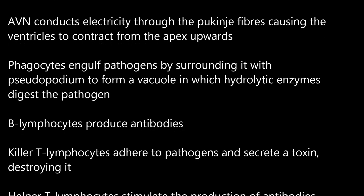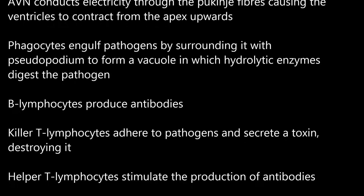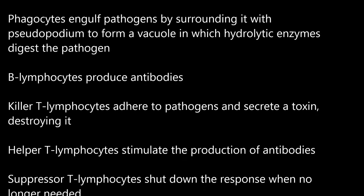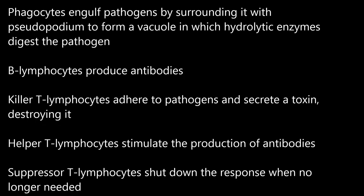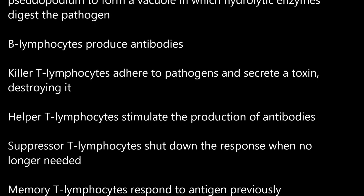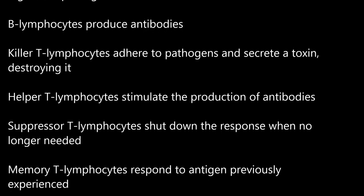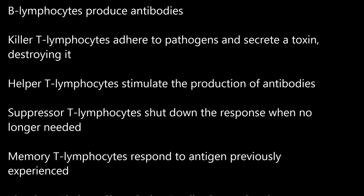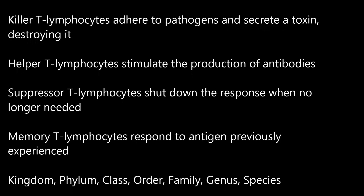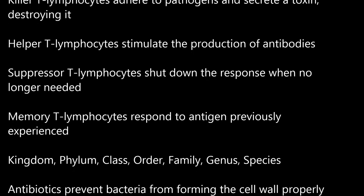Phagocytes engulf pathogens by surrounding them with pseudopodia to form a vacuole, in which hydrolytic enzymes digest the pathogen. B lymphocytes produce antibodies. Killer T lymphocytes adhere to pathogens and secrete a toxin, destroying it. Helper T lymphocytes stimulate the production of antibodies. Suppressor T lymphocytes shut down the response when no longer needed.